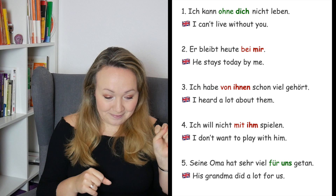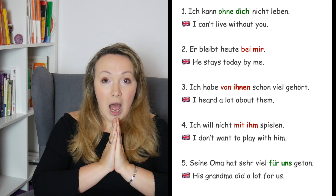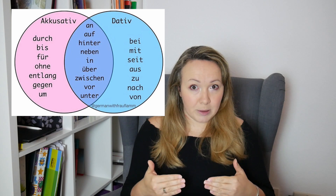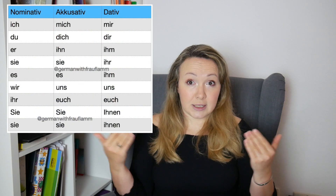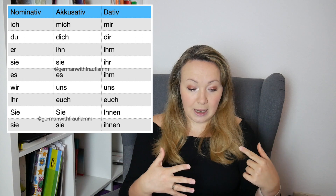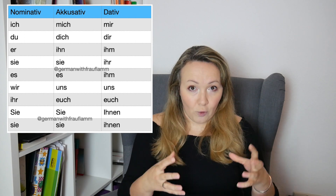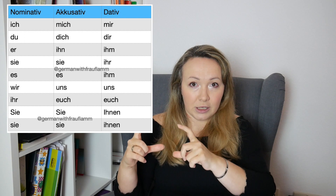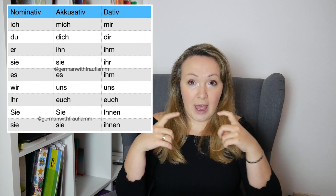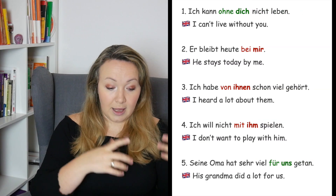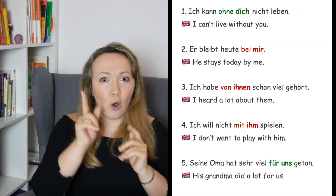Sentence number three: 'Ich habe von ihnen schon viel gehört' — I heard a lot about them. The preposition 'von' is always a dative preposition, and 'sie' (they) changes into 'ihnen', as you can see on your screen right now. So first you identify the case — in this example it's dative because of 'von' — and then you remember how the pronoun has to be changed. 'Sie' in nominative becomes 'ihnen' in dative.